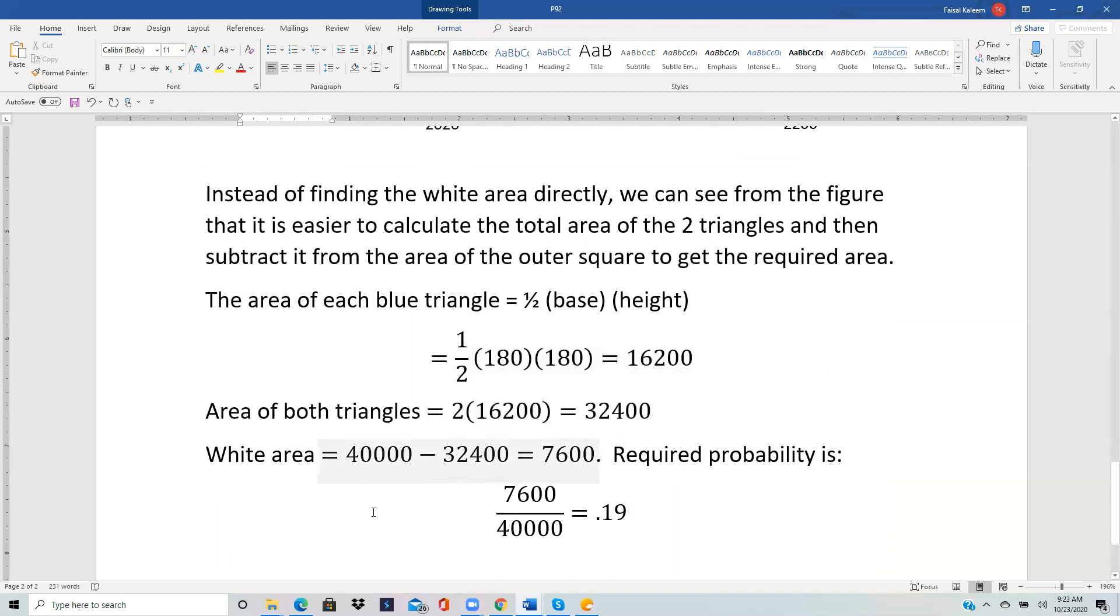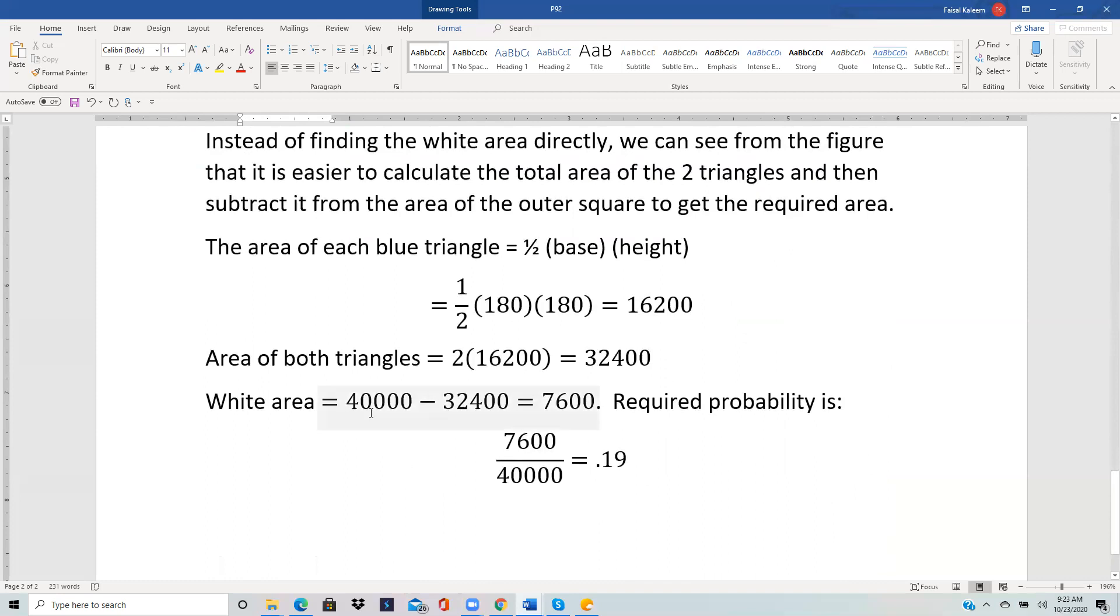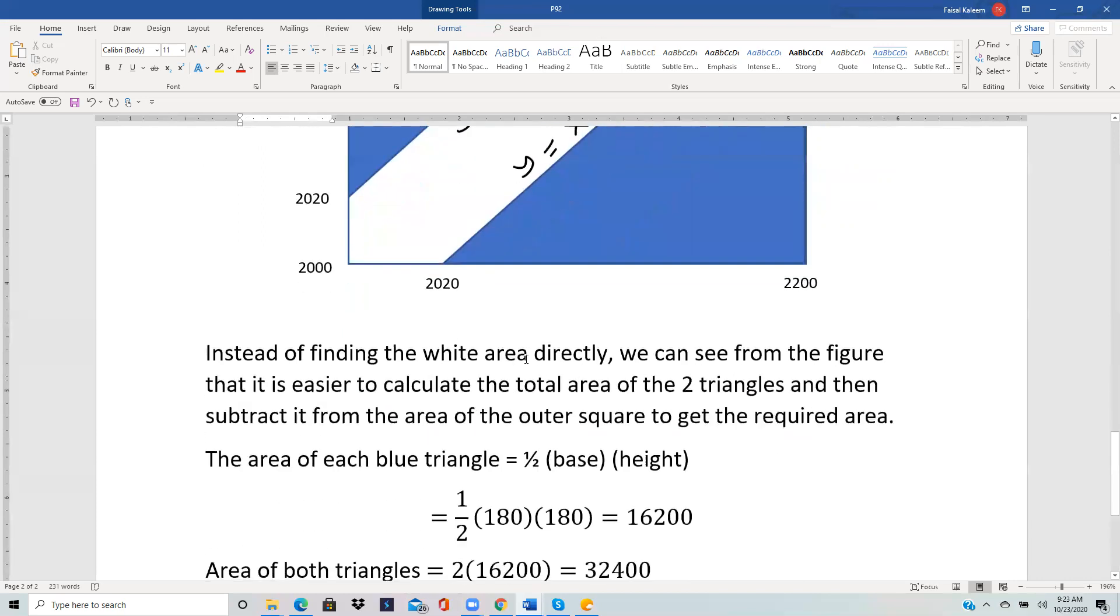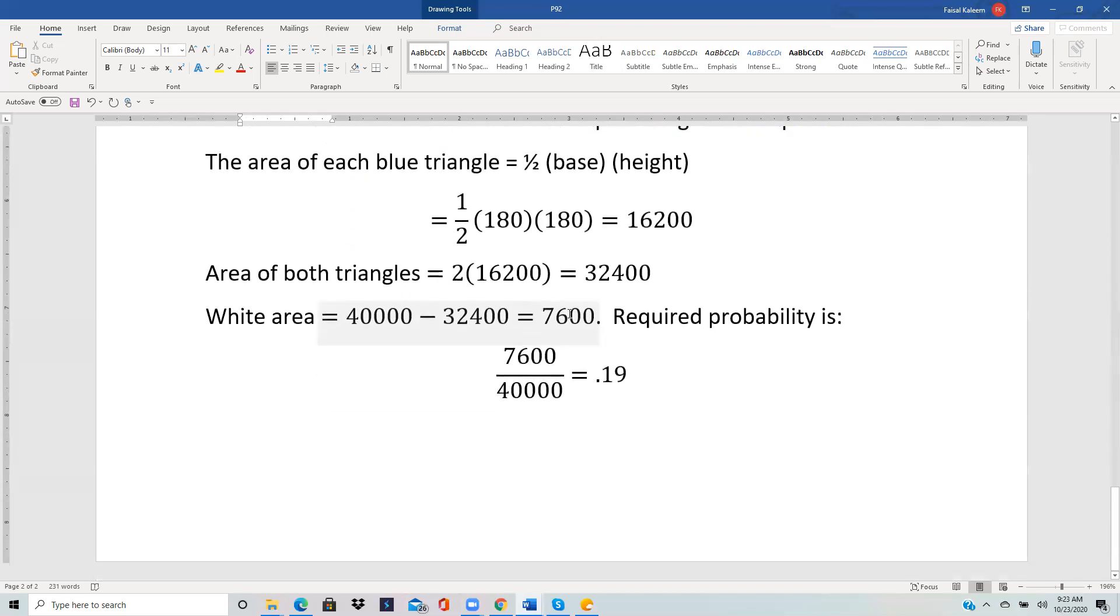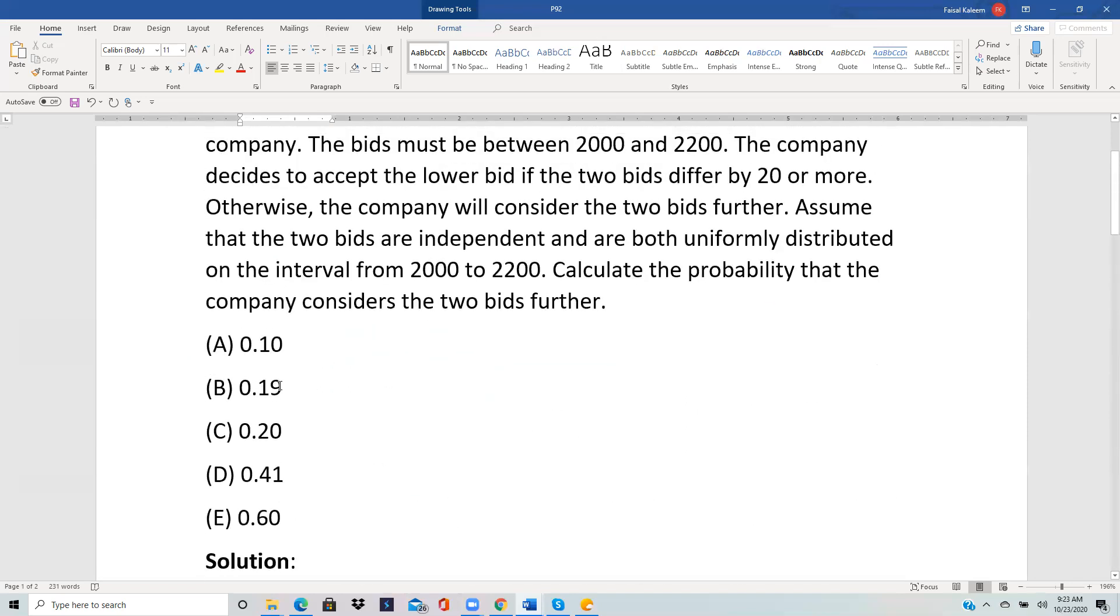The white area will be the area of the square minus the area of the two triangles. The area of the square is 40,000 minus 32,400, so you get 7,600. The required probability is the area of the white region, which is what we need, divided by the total area. 7,600 over 40,000 gives us 0.19, which is choice B.